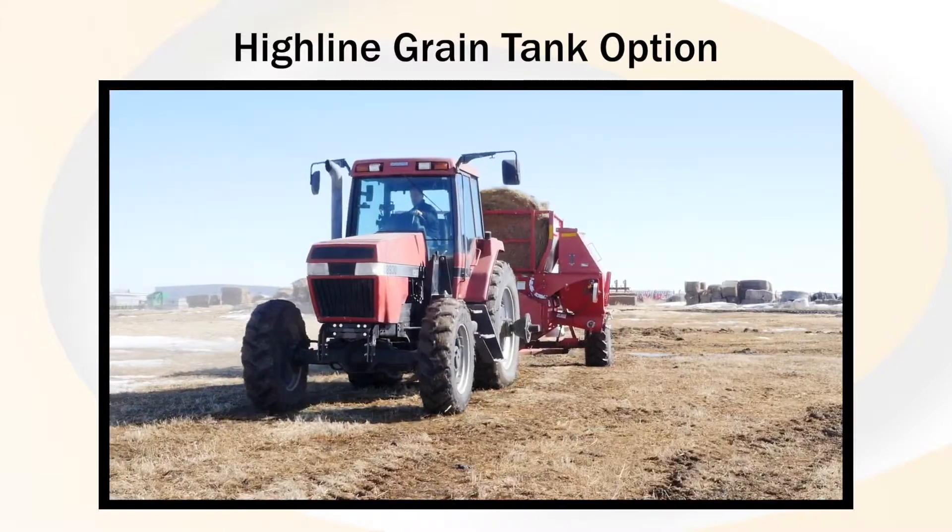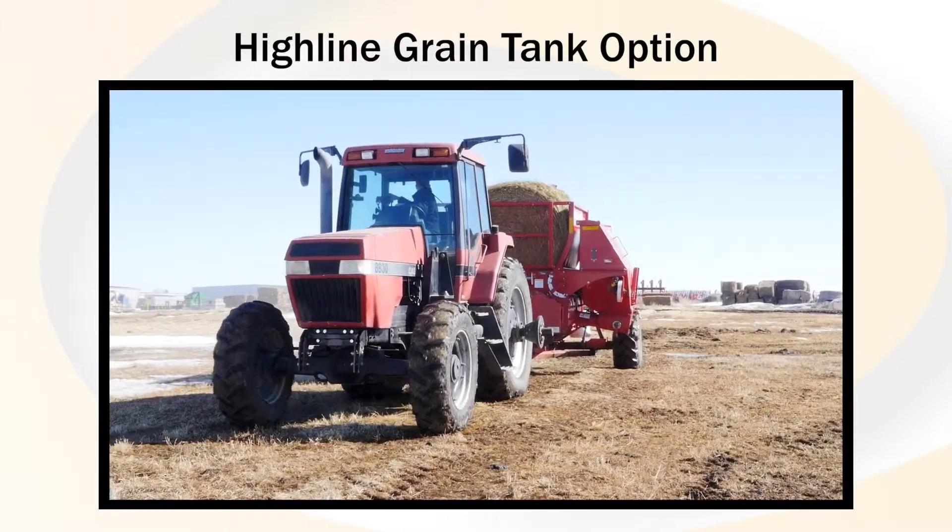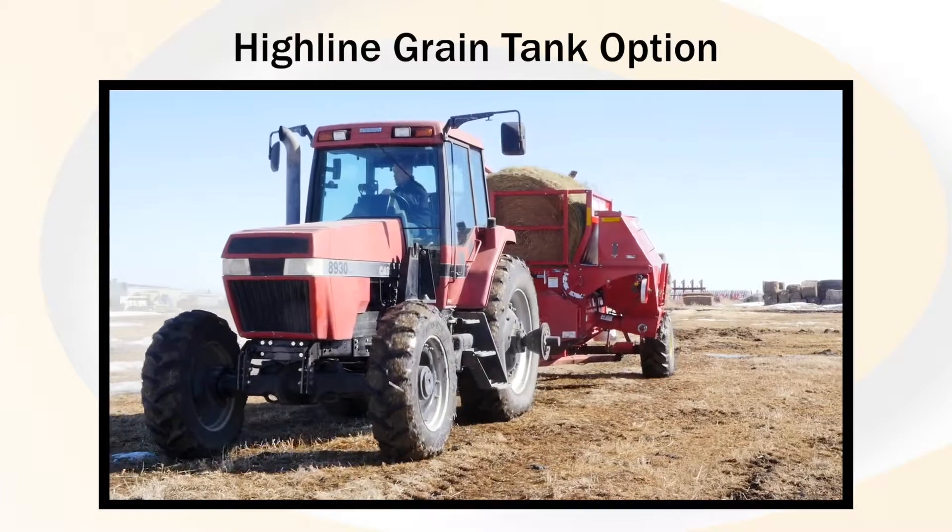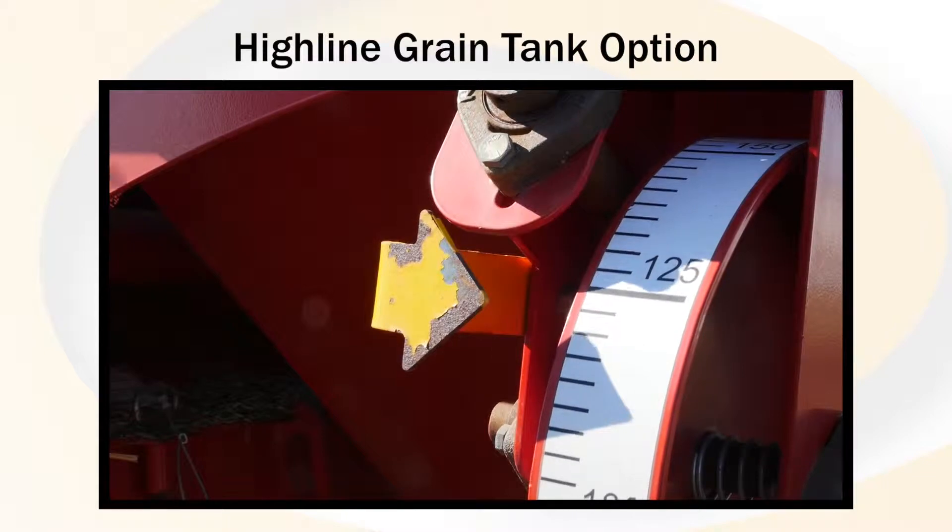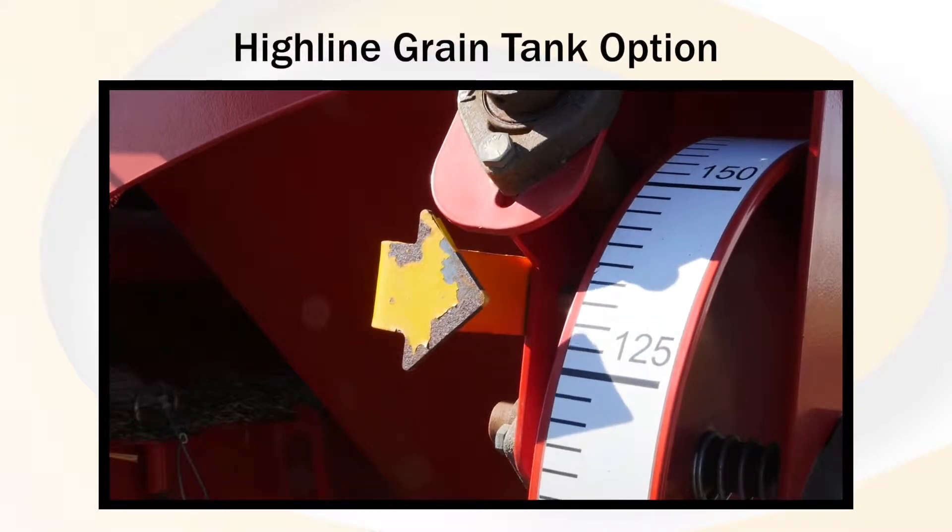The grain insertion system is a ground driven operation, driven off of the left wheel assembly. This video will step through the calibration procedure and sprocket selection for the intended rate of product.